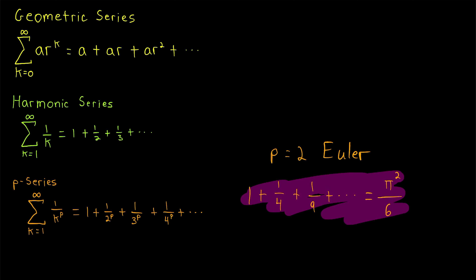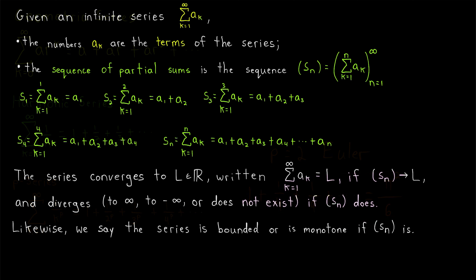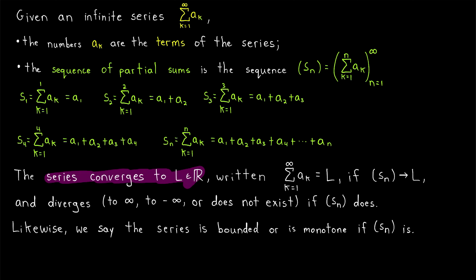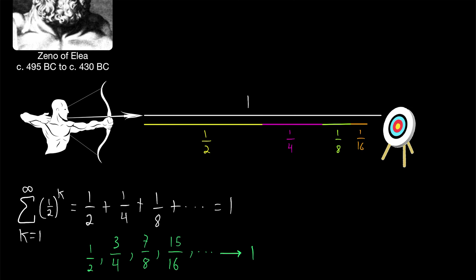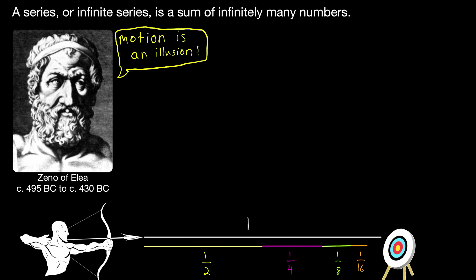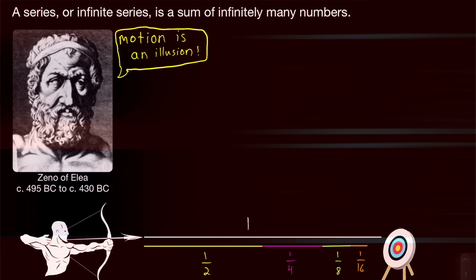A series is a sum of infinitely many numbers, and we say that a series converges to a real number and write the series equals that number if the sequence of partial sums converges to that number. Pay your respects to Zeno. Let me know if you have any questions, and I'll see you next time.